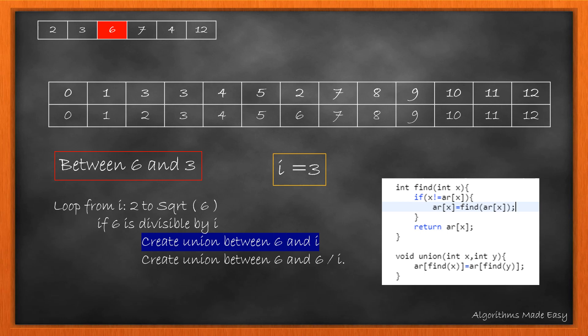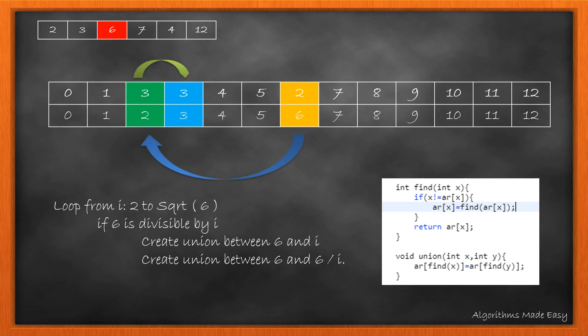Moving on with the prime factorization, we get 3 as a factor which means we need to create a relationship between 6 and 3 and also between 6 and 2. Both of these relationships are already there and hence there is no change in the array. When highlighting these three values that we changed in this iteration for 6, we see that we have created a relationship between 2, 3 and 6. Starting from 6, its parent is 2 and the parent of 2 is 3. After applying the same logic for all the elements, the array will look like this.